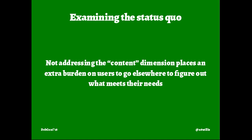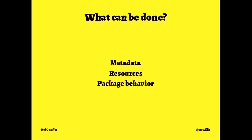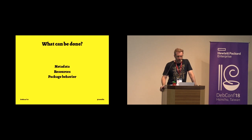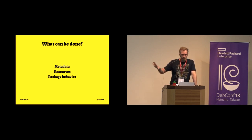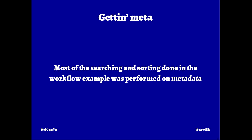The thesis here is that when we don't address that content dimension with the software stack, we give users no choice but to go elsewhere for their information about what's in the font — what it can do, what those features are. There are a lot of websites where you drag and drop a font and it shows you what the features are. Fortunately, I think all of those factors are addressable, some already in the process of being addressed. I would break it down into three dimensions: metadata, resources, and package behavior.